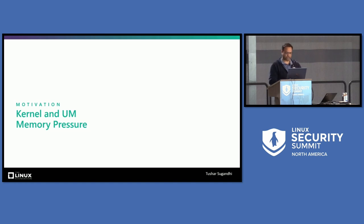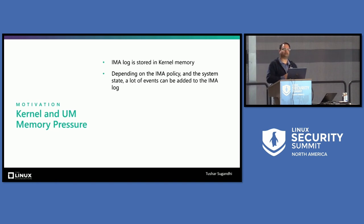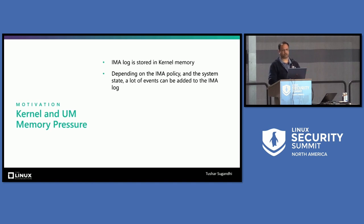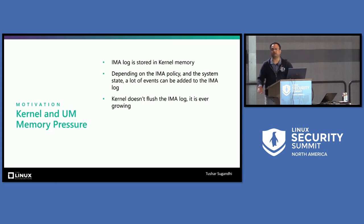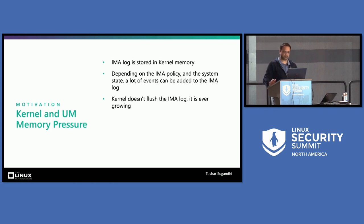The IMA log is stored in kernel memory. Depending on the IMA policy and system state, you can generate a lot of events — various critical data, device mapper block devices coming and going, file system measurements whenever those files are touched. It generates a lot of data. Kernel doesn't flush the IMA log — it is ever-growing — because if you flush it, there is loss of information and you cannot replay it on the server side or validate the tamper-proofness of the log. It's a genuine, good security design that the IMA log is not flushed currently. Truncating it would cause irrevocable attestation failures.